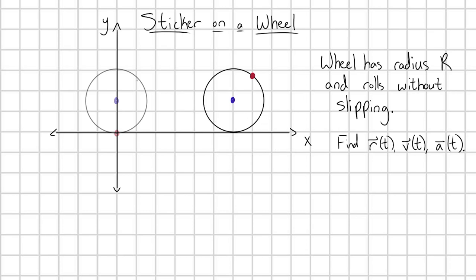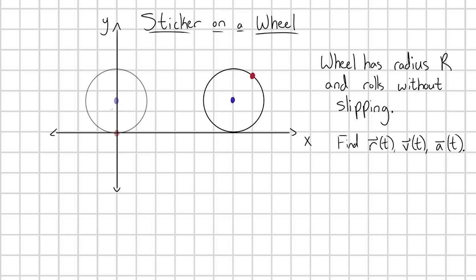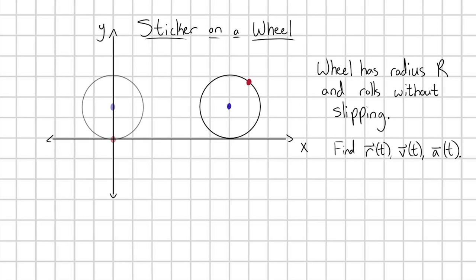With this notation here, with this kind of faded out gray, I'm indicating the initial conditions — that this sticker here is going to start at the base of the wheel, and the wheel's center is going to start out at x equals zero at t equals zero. So let's go ahead and get right into how we would tackle this problem.